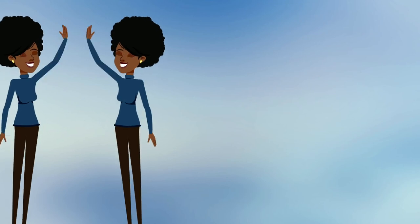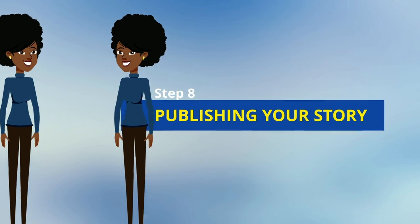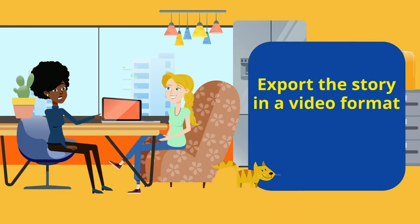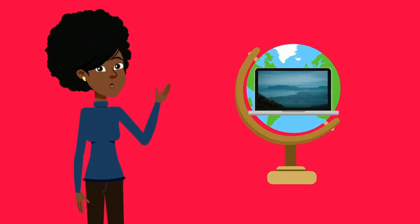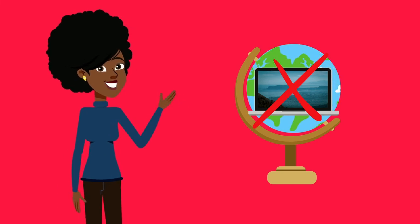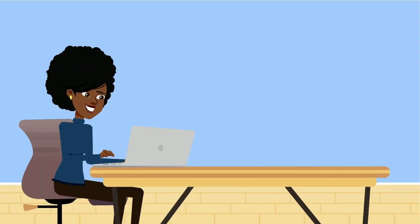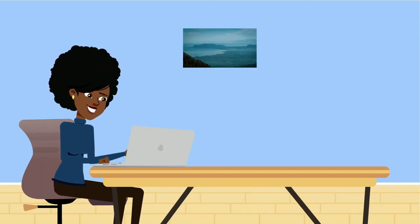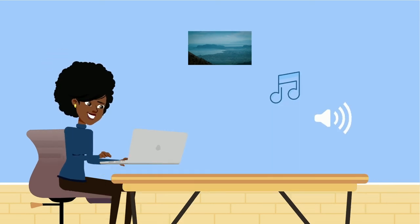Step 8: publishing your story. Once you are satisfied with the results, export the story in a video format and share it with your teacher, friends, family members and others, and ask for feedback. You can still make changes to your story, but once it is fully published and out in the open, making changes will be a bit harder to do. Before publishing, make sure that you have all the permissions to use pictures, music, sound effects, etc. — preferably in written form.